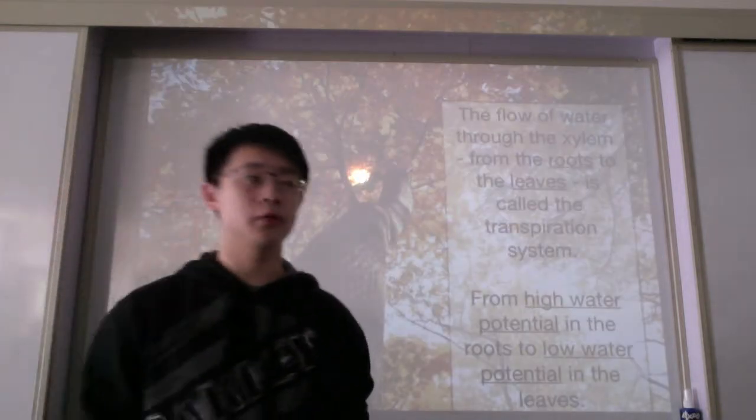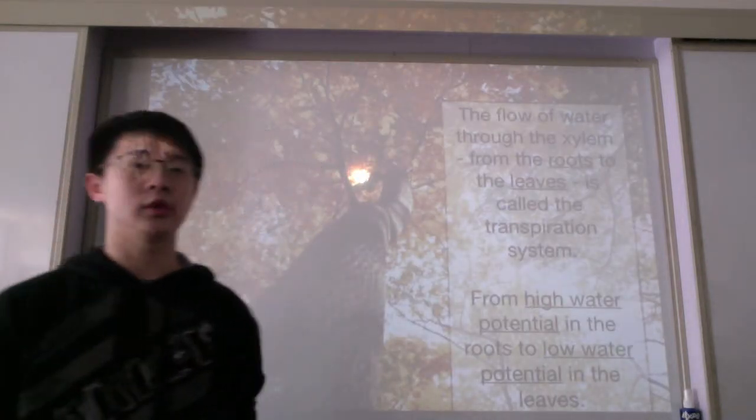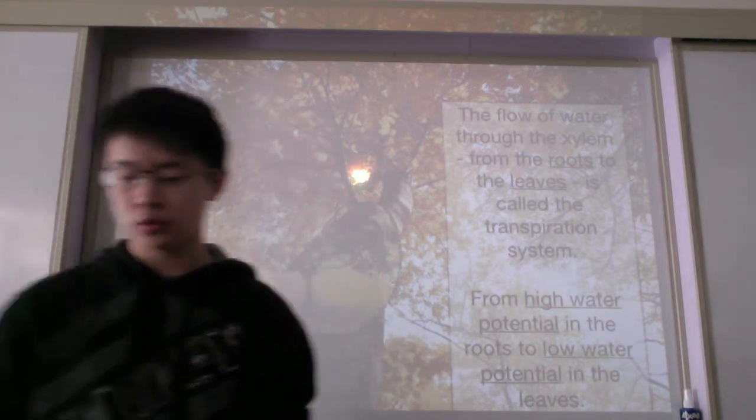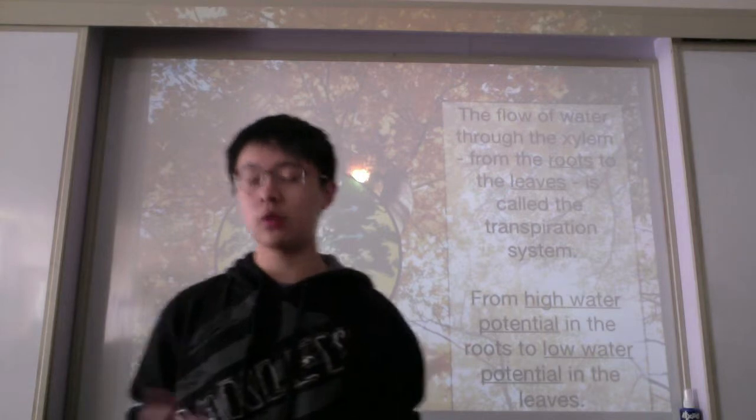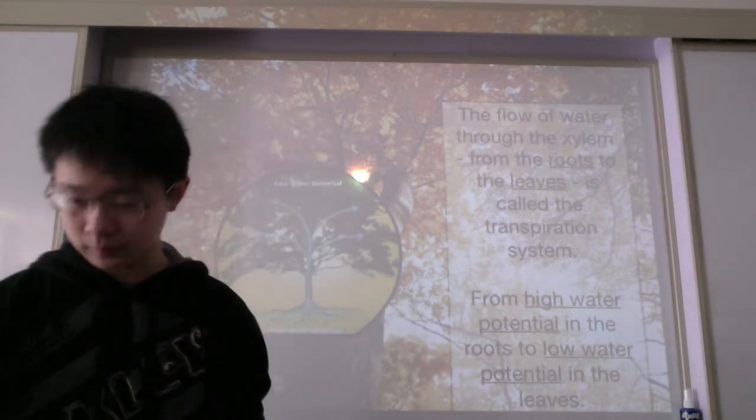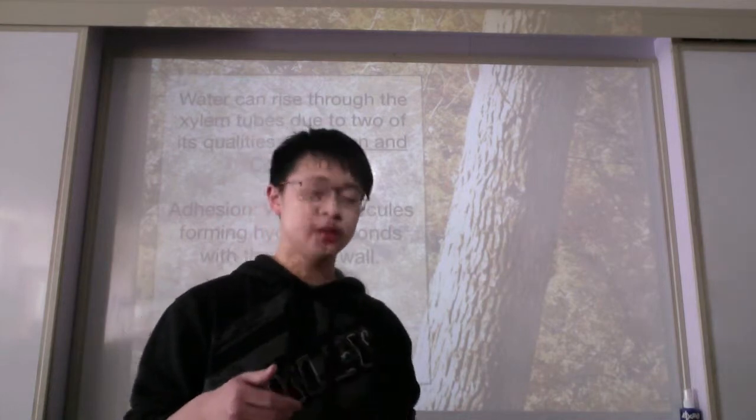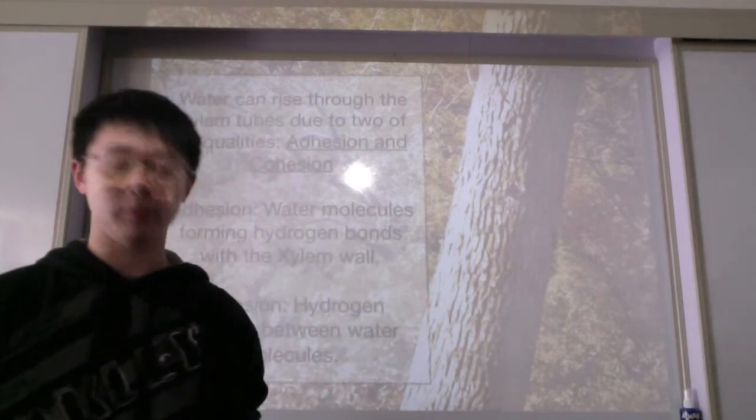The flow of water through the xylem from the roots to the leaf is called the transpiration system, from high water potential in the roots to lower water potential in the leaves. Water potential determines the direction at which the water will move throughout the plant.